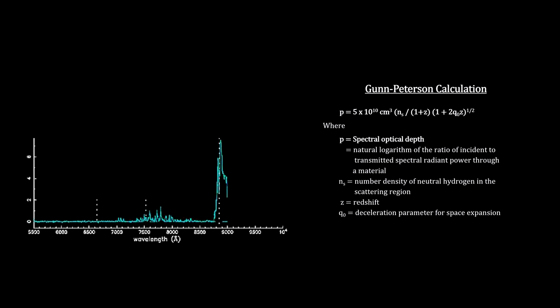They concluded that the IGM had already changed from molecular hydrogen to ionized hydrogen by the time the light left 3C9 10 billion years ago.